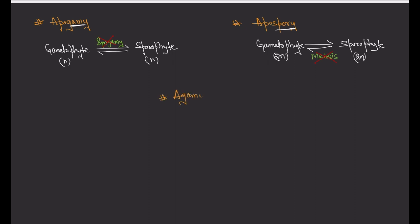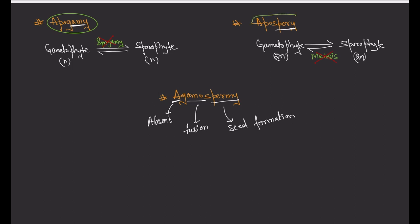One more related term is agamospermy. Breaking it down: 'a' means absent, 'gamo' means fusion, so agamospermy means absence of gamete fusion, but seed formation is still happening. It is the process of seed formation without undergoing any fusion of gametes.